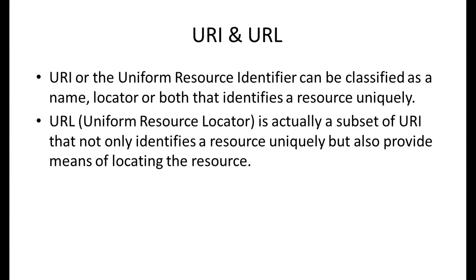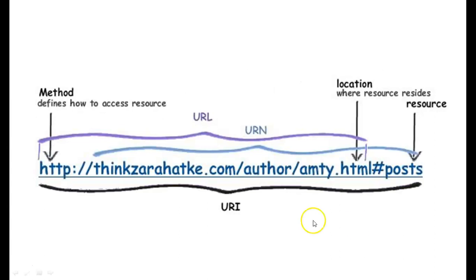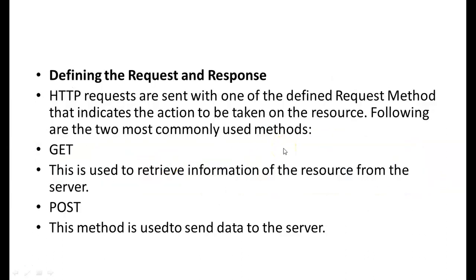A URI, or Uniform Resource Identifier, can be classified as a name, locator, or both, and it identifies a resource uniquely. A URL, or Uniform Resource Locator, is a subset of URI that not only identifies the resource uniquely but also provides means of locating the resource. So the portion from HTTP through the domain is the URL, while the full path including the document location is the URI.